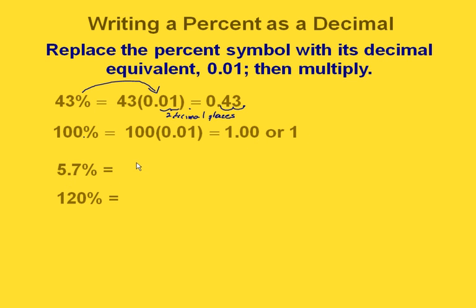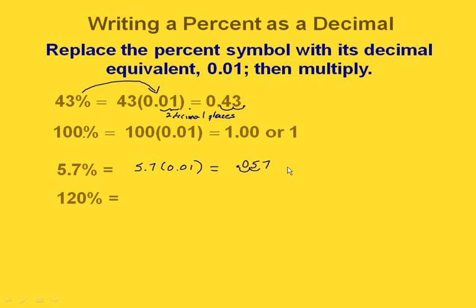Let's do a couple more. If we have 5.7%, that would be the same as 5.7 times 0.01. So all we're going to do is move our decimal point over two places. It started there, so we move it two places, and we have to write a zero in there as a placeholder. So we would end up with 57 thousandths.